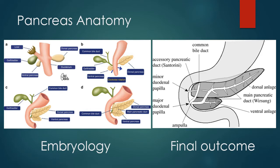The dorsal pancreas develops faster than the ventral pancreas. The ventral pancreas rotates towards the dorsal pancreas and finally joins it. In the final anatomic arrangement, the dorsal anlage forms the major part of the pancreas — the head, body, and tail — whereas the ventral anlage forms the minor part, mainly the uncinate process of the pancreas.